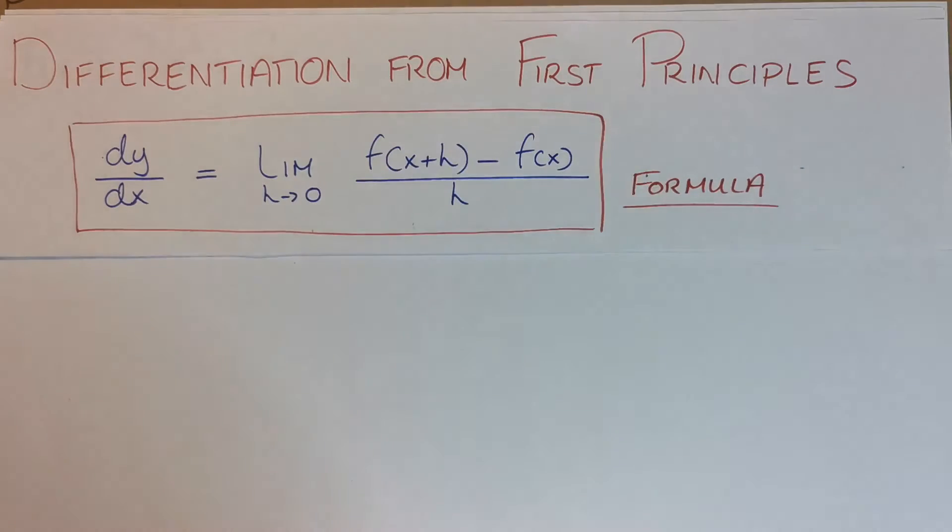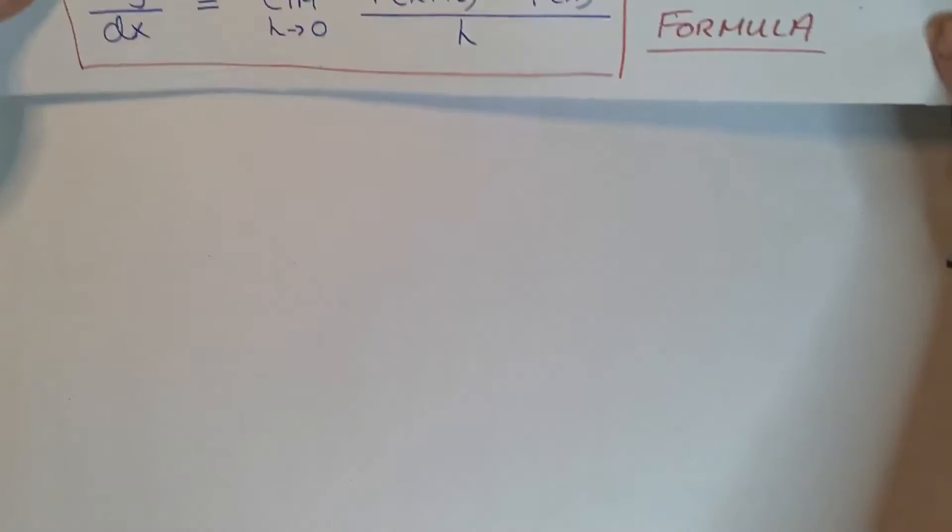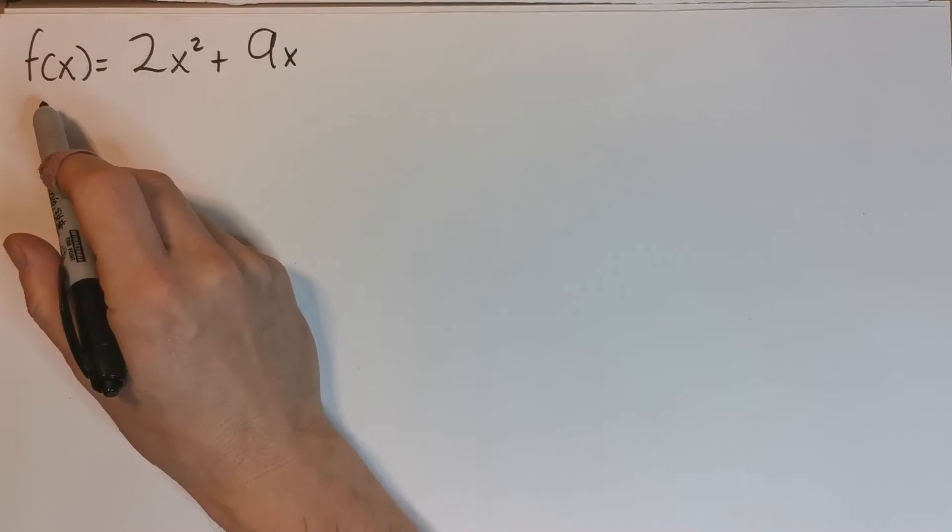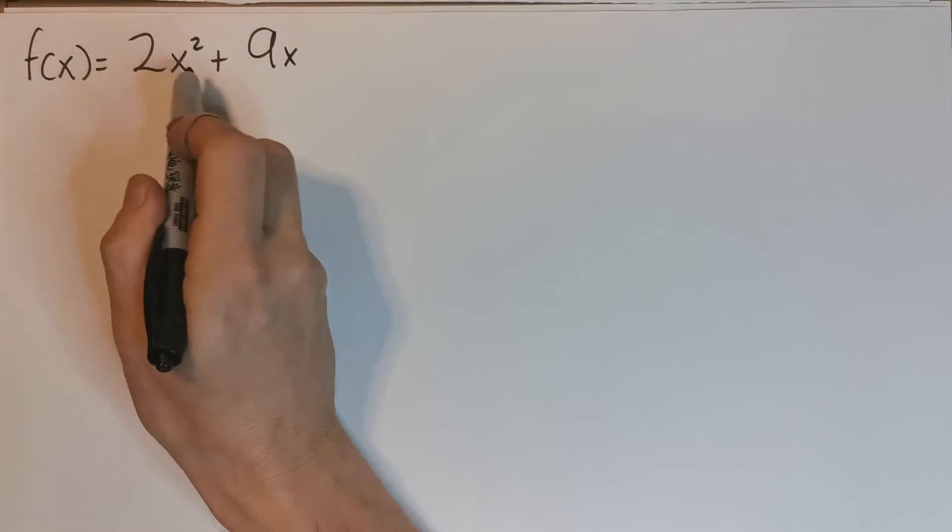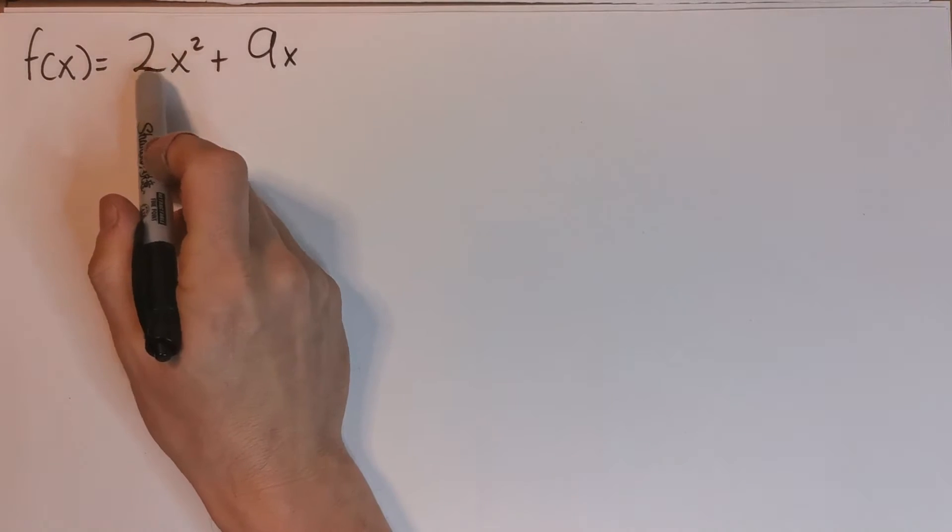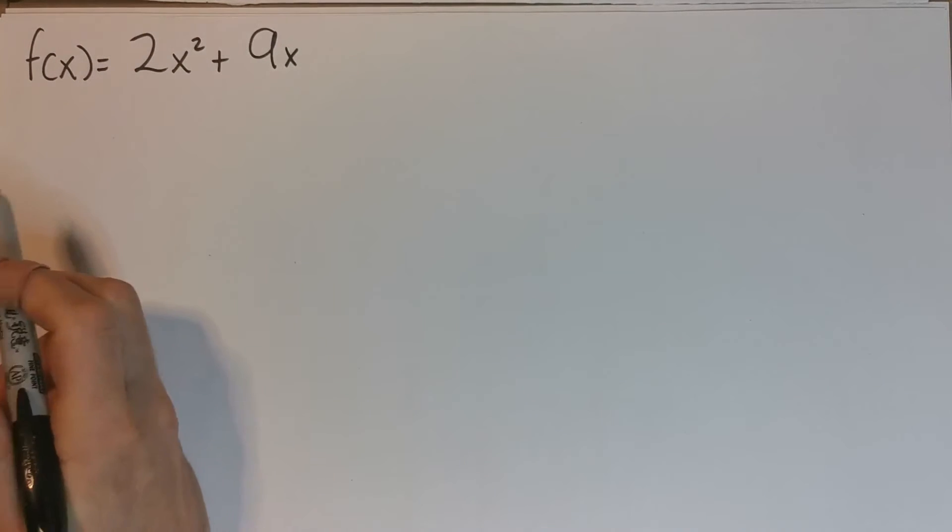So it's called first principles differentiation. Let's look at an example here. I'll put this to the side because I might use it again in a minute. So here's a simple derivative to get: f(x) = 2x² + 9x. We should know now at this stage that by the power rule this should be 4x + 9, but we could be asked in an exam to use first principles.